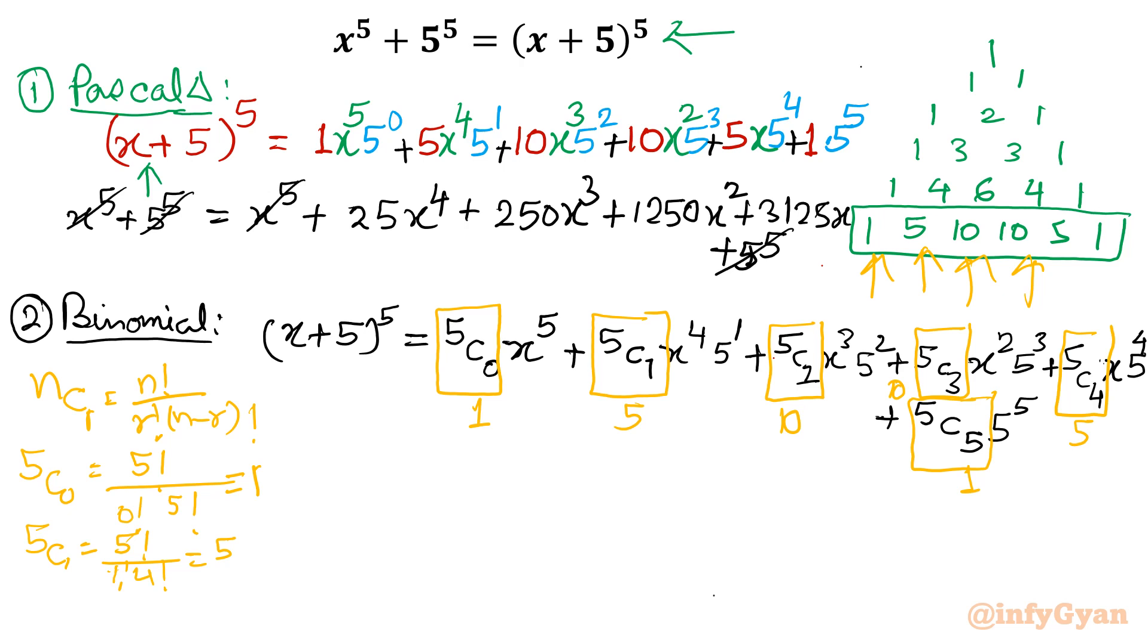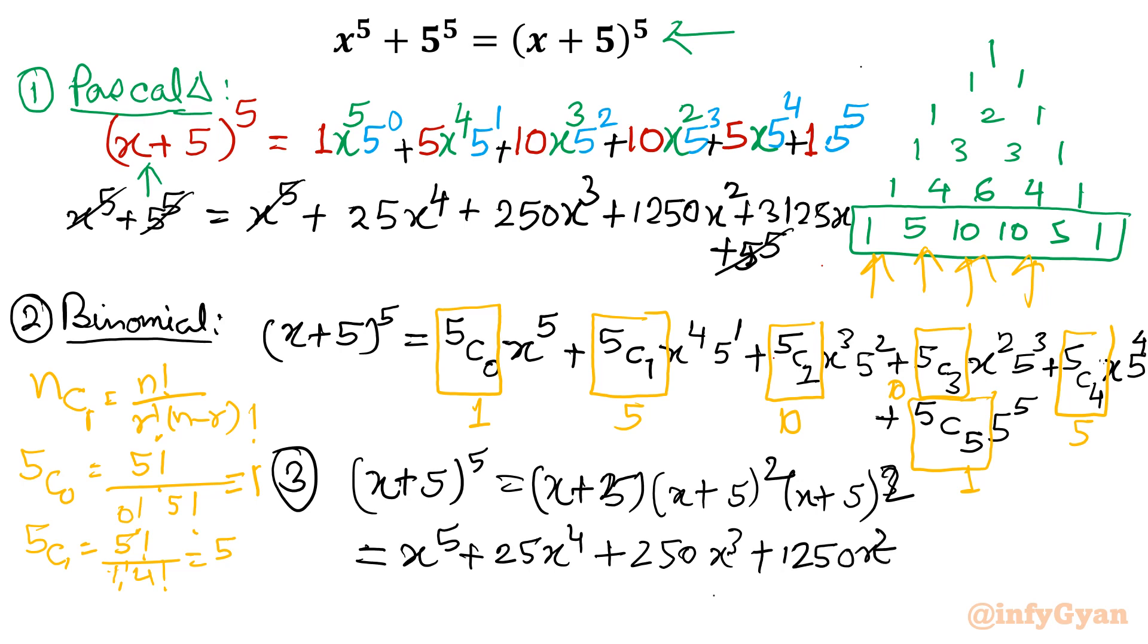Now third method, which is very general. Someone suppose is not able to apply Pascal or binomial, then he can write (x+5)^5 simply in product form: (x+5)·(x+5)^2·(x+5)^2. Write (x+5)^2 = x^2+10x+25, take the product, then multiply by x+5. You will get x^5 + 25x^4 + 250x^3 + 1250x^2 + 3125x + 5^5.